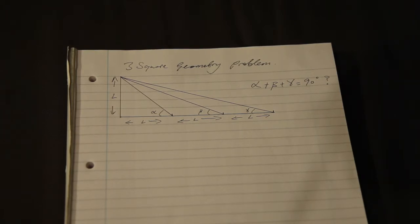And the problem is to show that if you add them up, alpha plus beta plus gamma is equal to 90 degrees. So I'll just show you my solution.